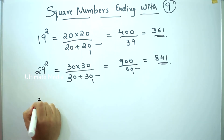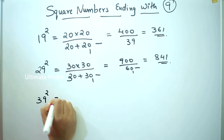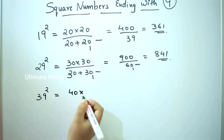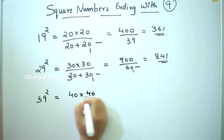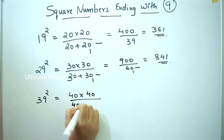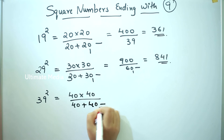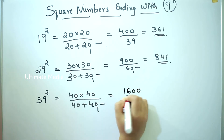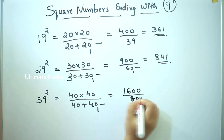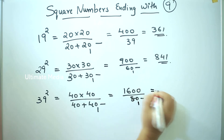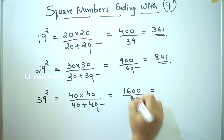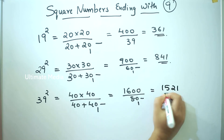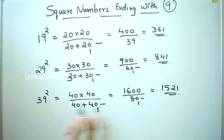Next, 39 square. 40 into 40, by 40 plus 40, minus 1. 1600 by 80 minus 1 = 79. The answer is 1521. So 39 square is 1521.